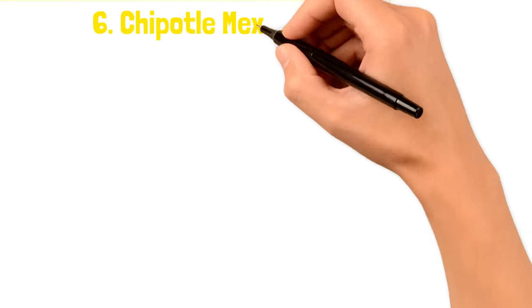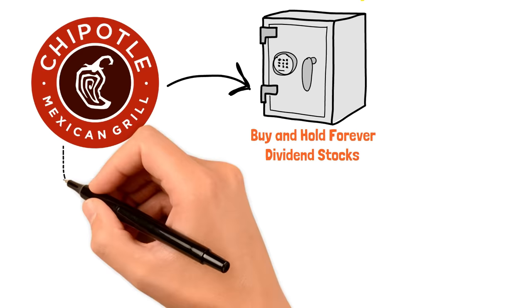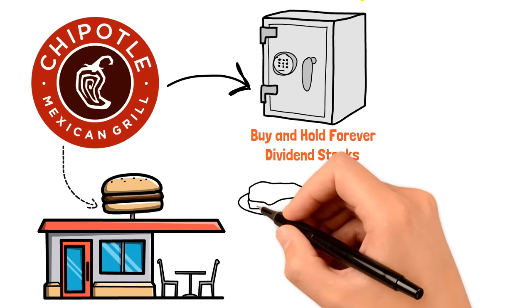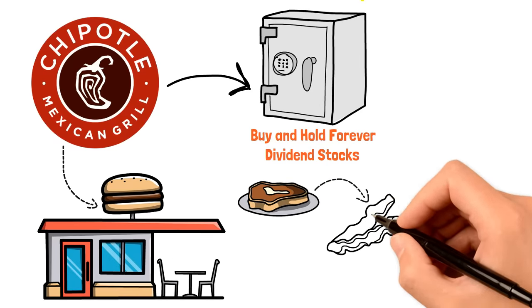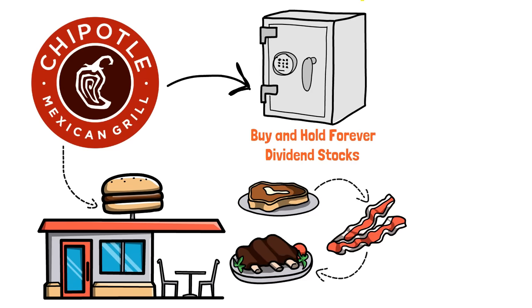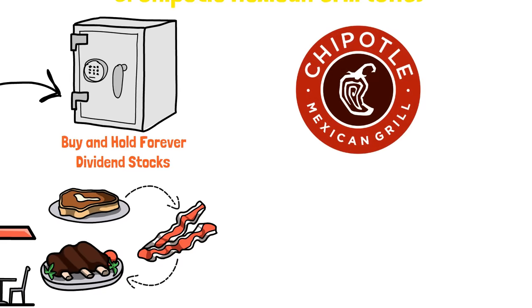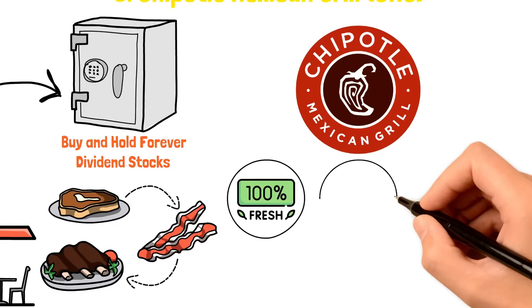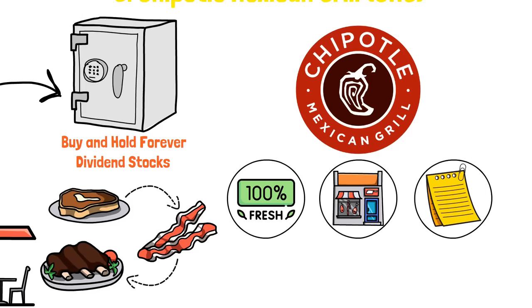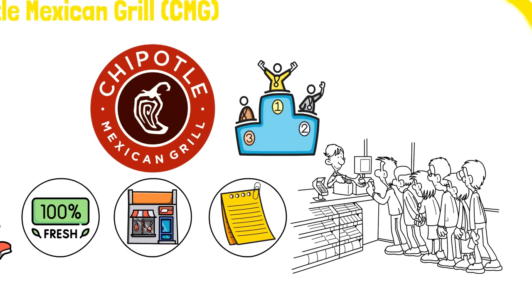Chipotle Mexican Grill stands out as a spicy pick in Bill Ackman's seven buy-and-hold-forever dividend stocks, embodying a unique blend of fast-casual dining with a commitment to sustainability and quality. Ackman's investment in CMG shows how much he believes in the brand's strong growth, which is driven by its food-with-integrity philosophy and its strong connection with health-conscious customers. Chipotle's innovative approach to the restaurant industry, emphasizing fresh ingredients, transparent sourcing, and customizable meals, has not only set it apart from competitors, but has also paid the way for a loyal customer base and impressive financial performance.